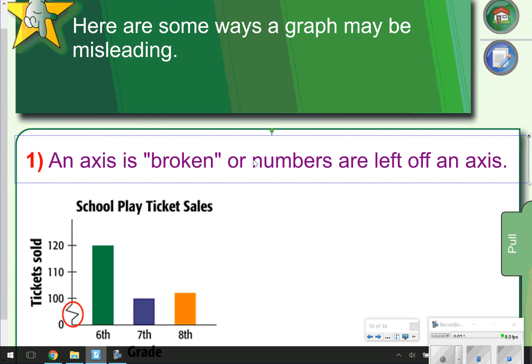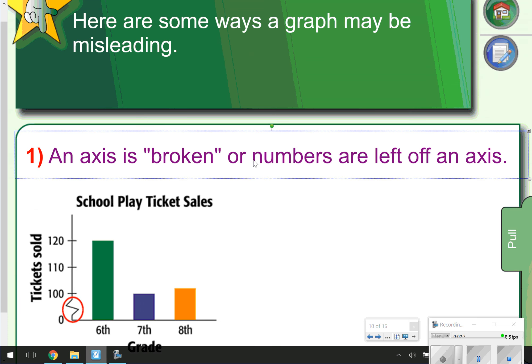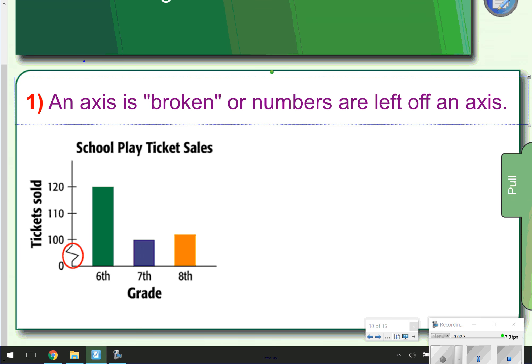The first thing we're going to write down is how a graph is misleading. So again, you're going to need to pause the video here to copy. An axis is broken or numbers are left off of the axis. The main thing you're concerned about is this guy right here, the broken axis. Go ahead and take the time to pause, write down, and click play when you're ready to go on to number 2.